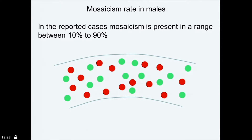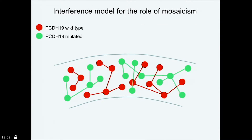In males, mosaicism has different characteristics than in females because it's not due to inactivation of the X chromosome. Depending on the tissue tested, the mosaic rate has been found varying between 10 and 90 percent — so 10 percent mutated cells or 10 percent normal cells. That also suggests that even a small percentage of wild-type cells might be enough to push the phenotype towards the epileptic phenotype. The model that has been presented to explain this is the interference model, in which there might be different patterns of connection between wild-type and mutated neurons, with a spatial distribution we totally ignore.